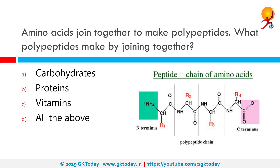Amino acids join together to make polypeptides. What do polypeptides make while joining together? Amino acids together form polypeptide chains, and polypeptide chains join together to form proteins. Proteins are made up of chains of amino acids bound by bonds called peptide bonds. There are some 22 different known amino acids which can compose proteins, and there may be many more unknown to us.